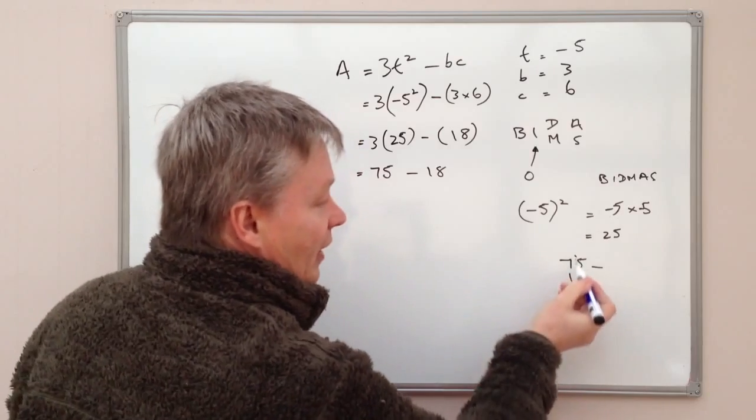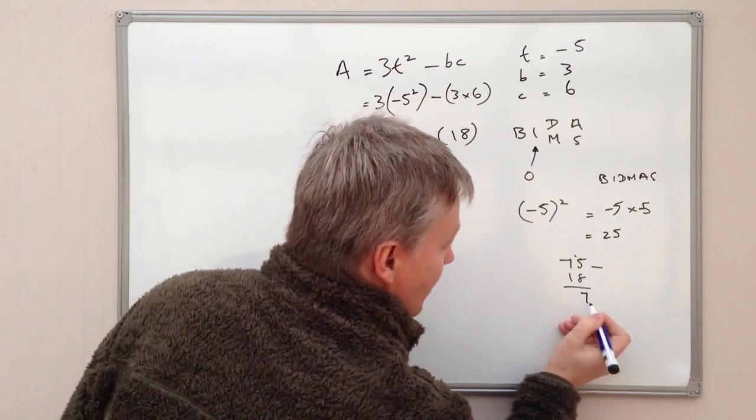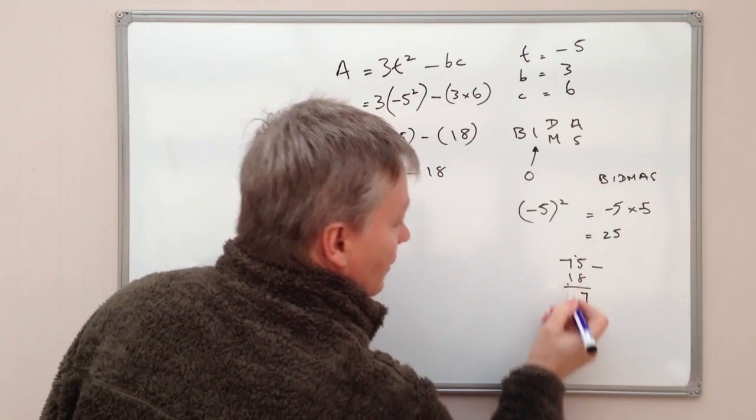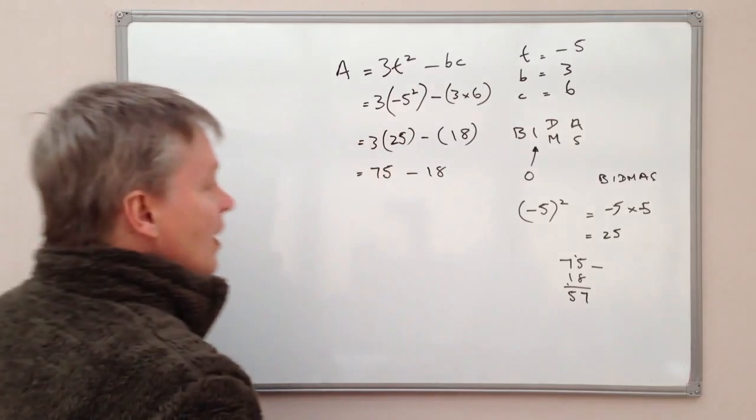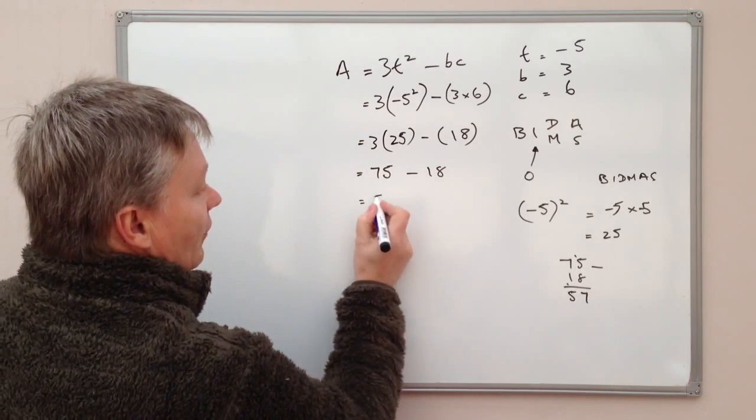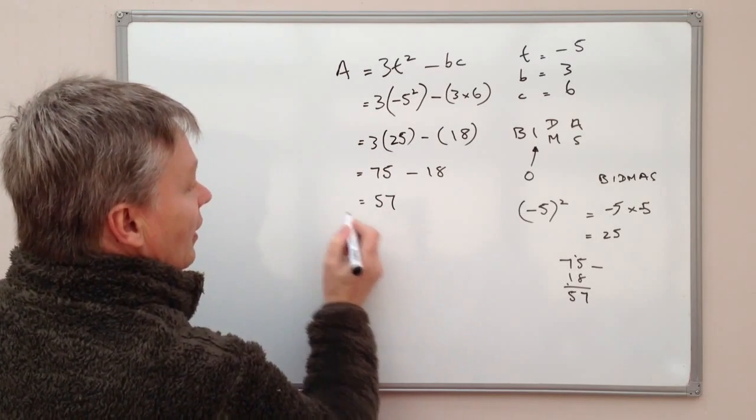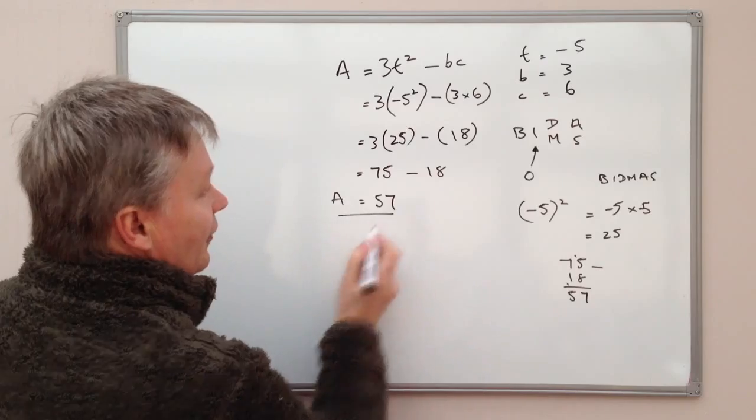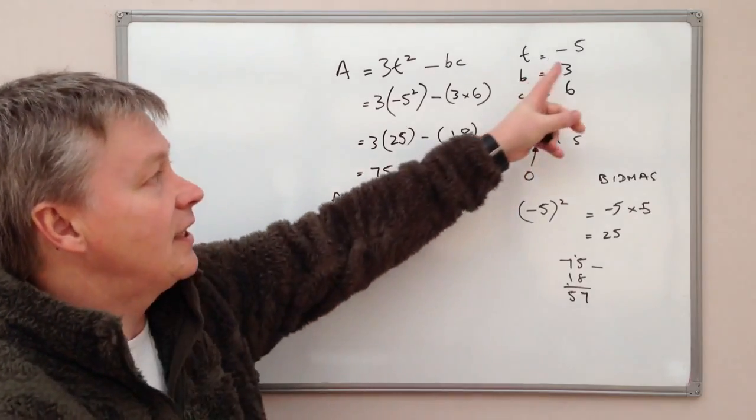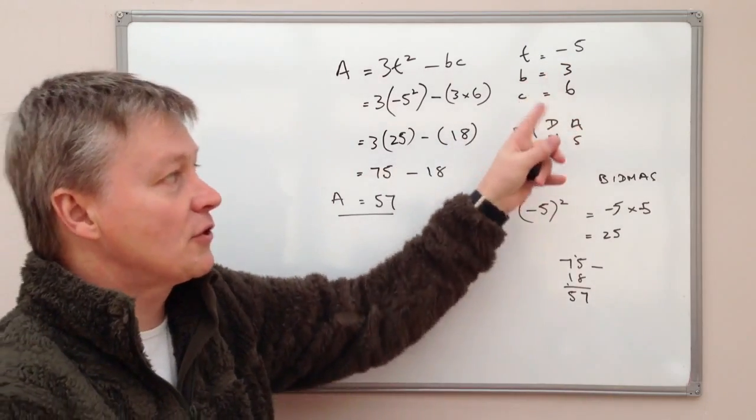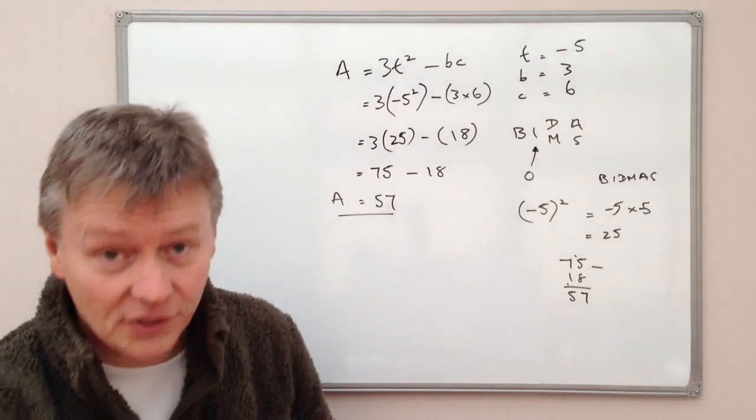So I'm going to make that 15. So it's 15 take away 8 is 7, remainder 1, so 5. So the answer to this particular formula, A will equal 57 when T equals minus 5, B equals 3 and C equals 6.